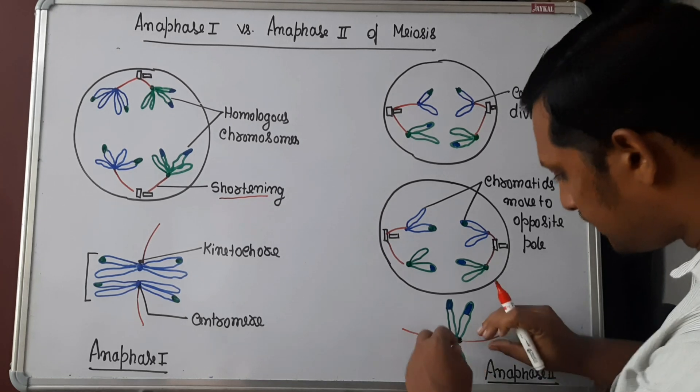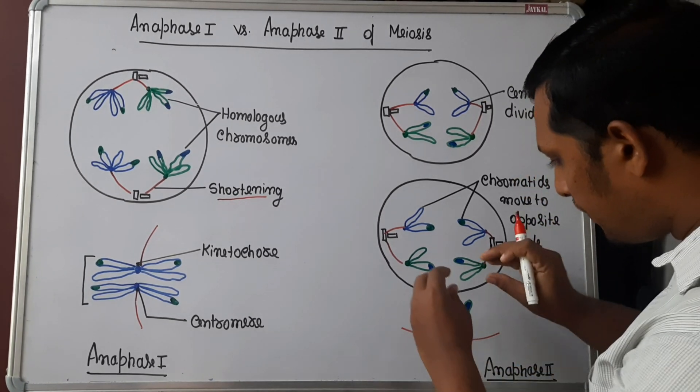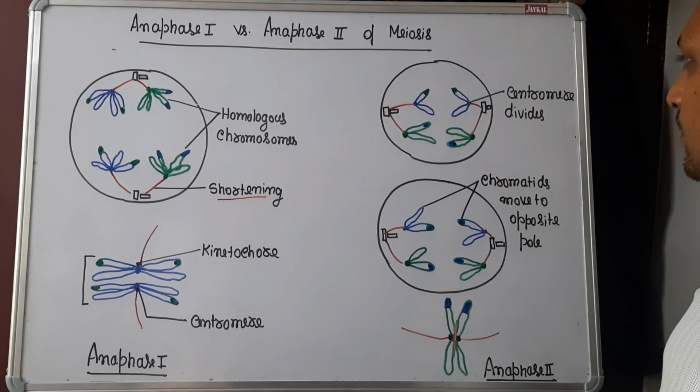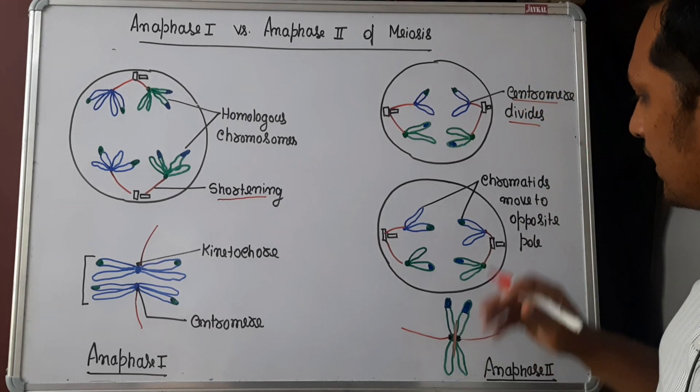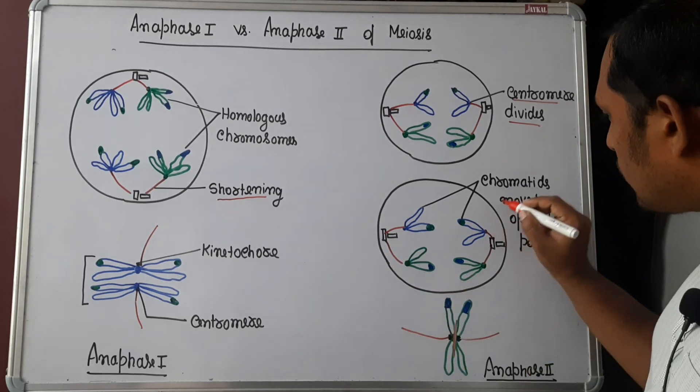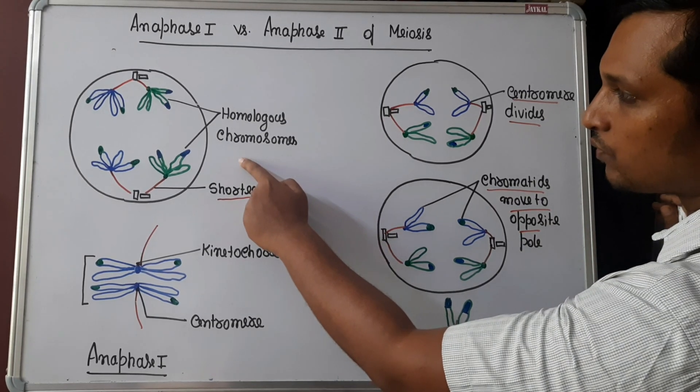So when the spindle fibers shorten up, what happens is there will be a splitting of the centromere. The centromere divides and as the spindle fibers shorten, chromatids move to the opposite pole, whereas in anaphase 1 homologous chromosomes move to the opposite pole.